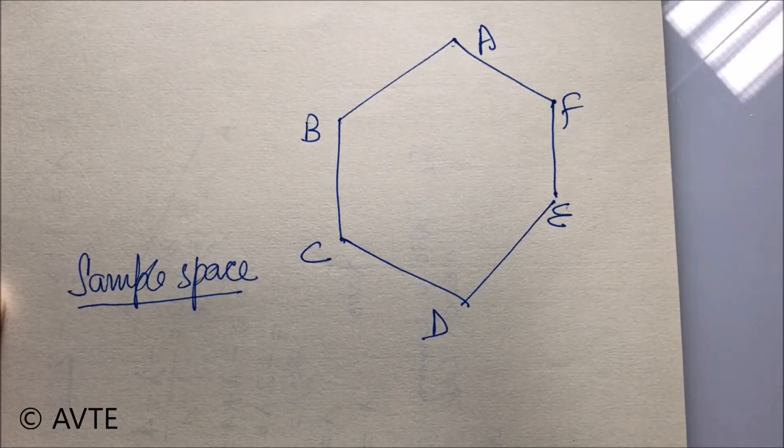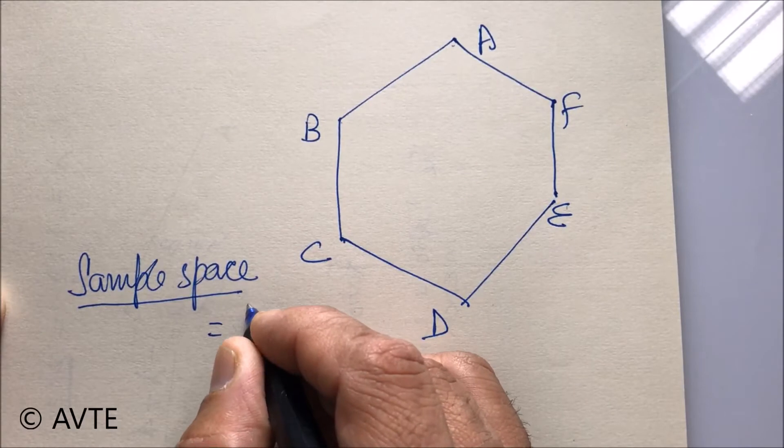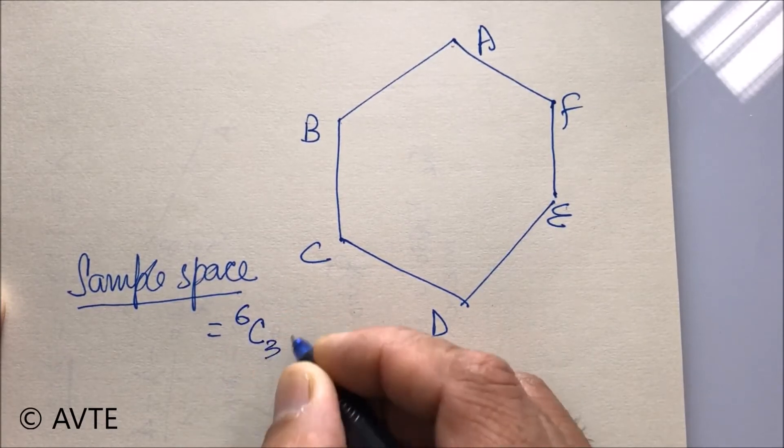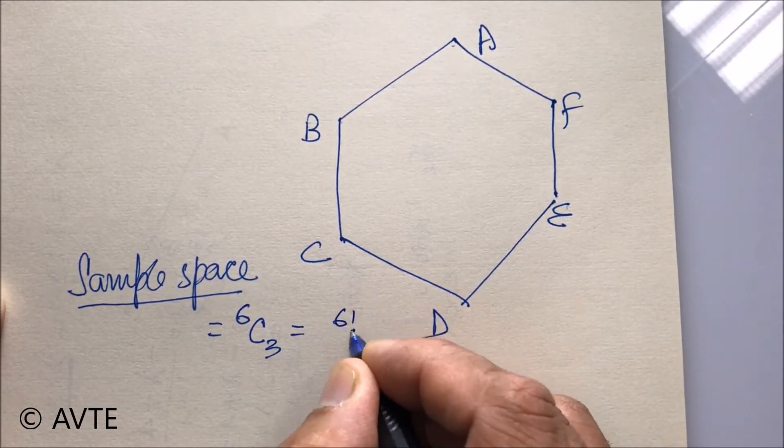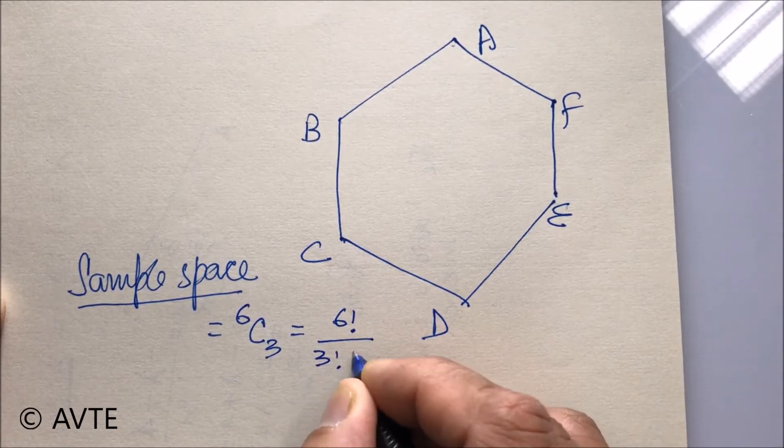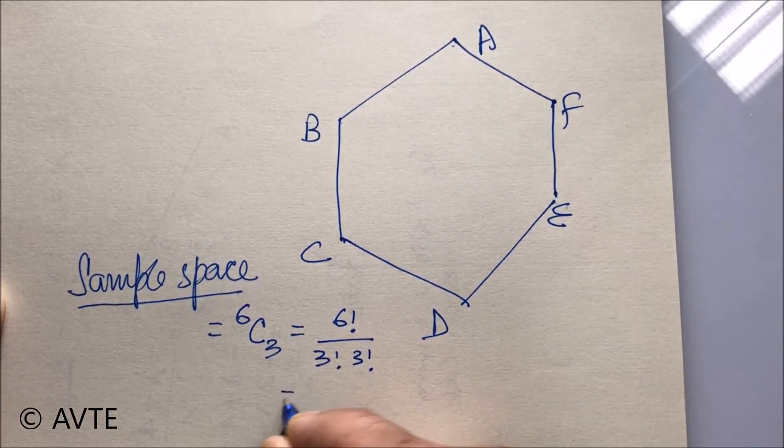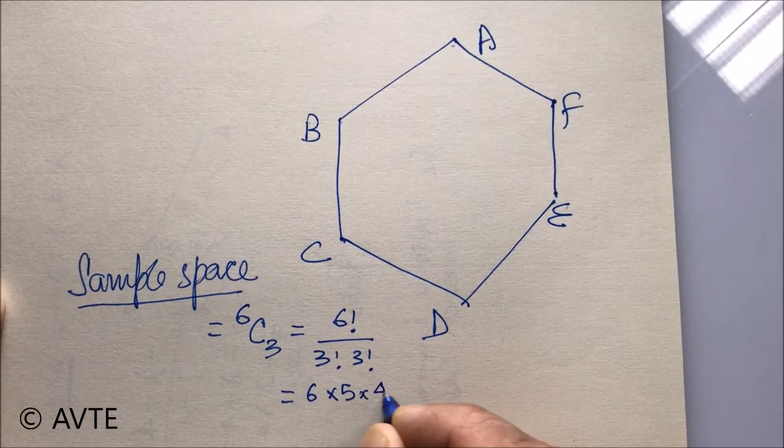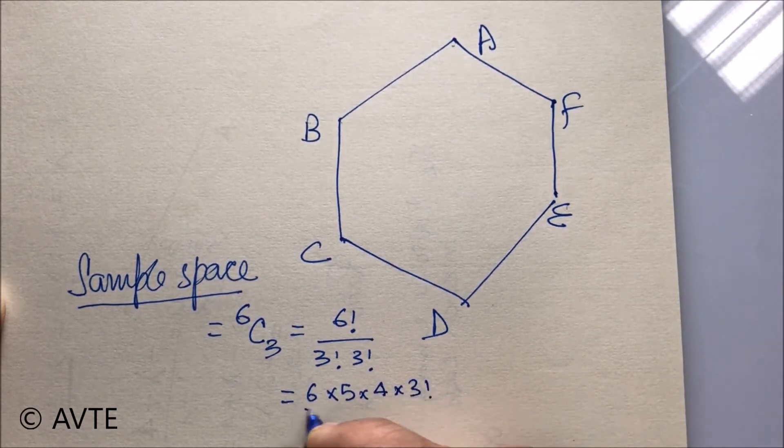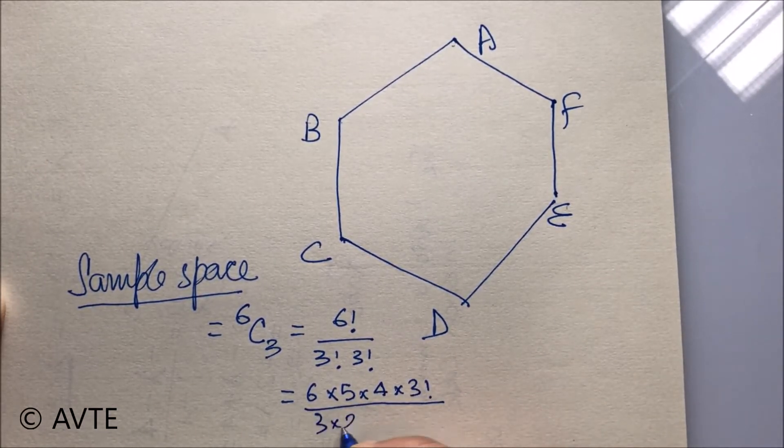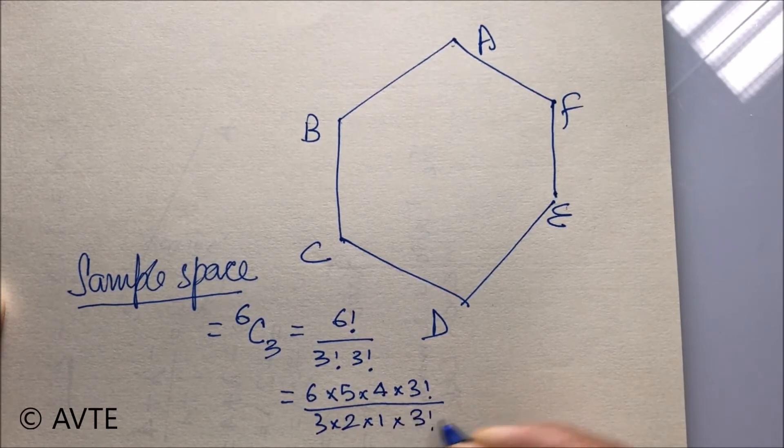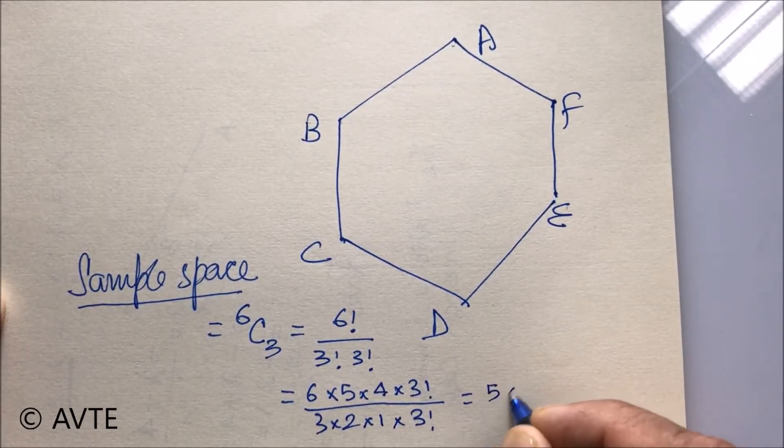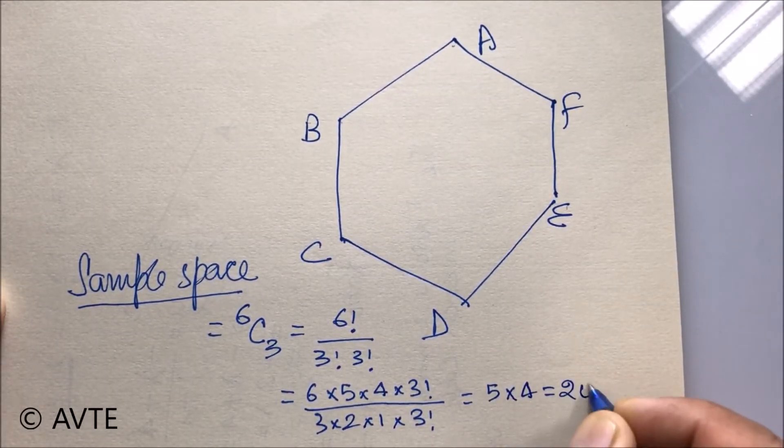Because no three points will be collinear, it is simply 6C3, that is 6 factorial upon 3 factorial into 3 factorial. That is 20.